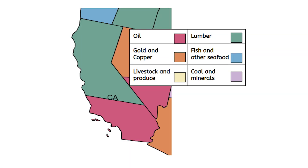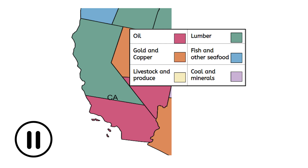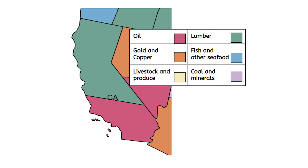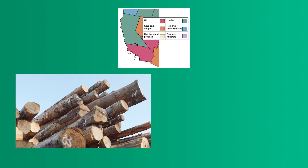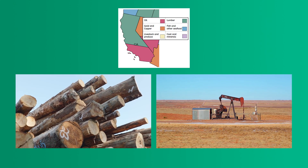What natural resources do you notice come from California? And what inferences can you make about the types of jobs and businesses that might exist in the state using these natural resources? Pause the video here to draw conclusions and make inferences related to the economics of California. Based on the key, I can see that in California they also have lumber and oil. I can infer that they probably have some similar businesses and jobs to those in Montana.